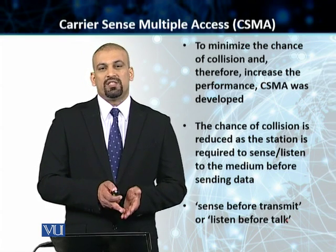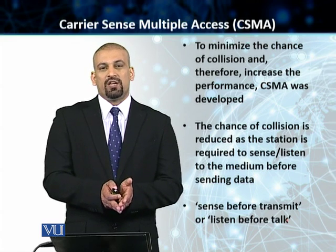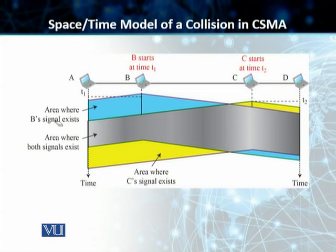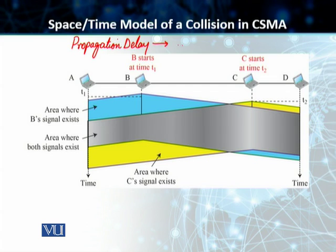I'll explain why collisions still happen although every single station is now sensing and listening to the medium before throwing any data on it. The concept here is that of propagation delay — the reason for collisions is propagation delay. When a station sends a frame in CSMA, it still takes some time before this frame gets to all the other stations sharing the medium. That small amount of time — the time it takes for the first bit of a frame to reach all other stations — is called propagation delay, and this is what causes collisions even though every station is listening.